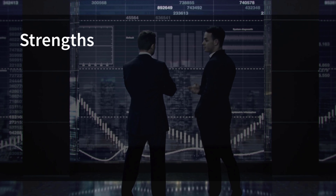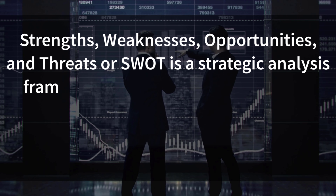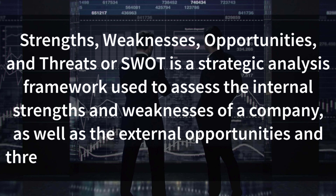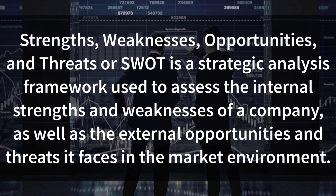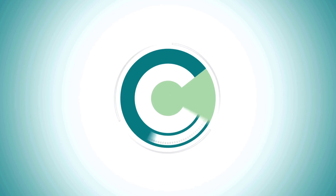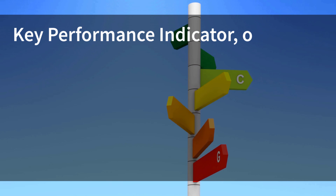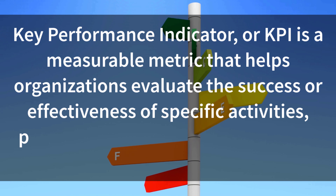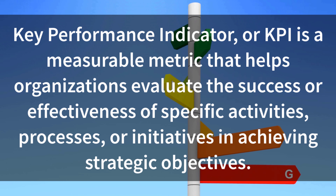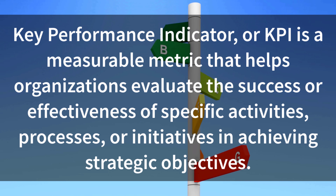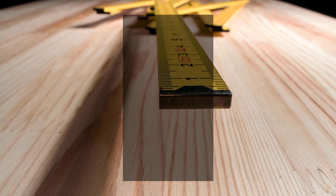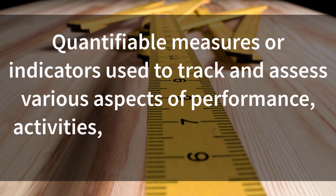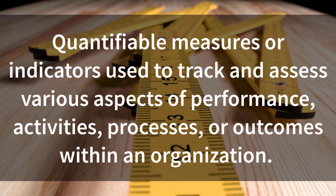SWOT: Strengths, weaknesses, opportunities, and threats, or SWOT, is a strategic analysis framework used to assess the internal strengths and weaknesses of a company as well as the external opportunities and threats it faces in the market environment. KPI: Key performance indicator, or KPI, is a measurable metric that helps organizations evaluate the success or effectiveness of specific activities, processes, or initiatives in achieving strategic objectives. Metrics: Quantifiable measures or indicators used to track and assess various aspects of performance, activities, processes, or outcomes within an organization.